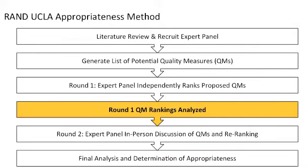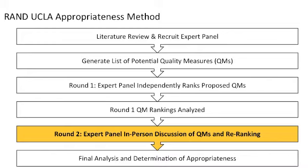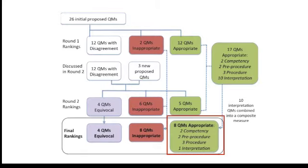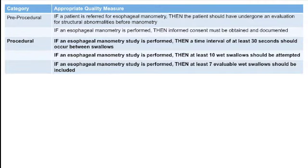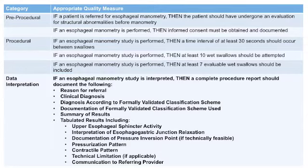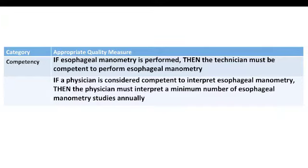After round one, our study team analyzed these measures for agreement and appropriateness. The measures and rankings were then discussed at a round two meeting hosted in Washington, D.C. in May 2015. Our study team compiled a packet of literature review summaries and ranking summaries, which experts reviewed prior to the meeting. In round two, all measures were discussed, debated, reviewed, and re-ranked for appropriateness. Finally, our study team performed a final analysis and found that 17 potential quality measures were ranked as appropriate with high agreement — two related to pre-procedural, three were procedural, and ten were combined into one composite data interpretation measure, with two additional measures related to competency.